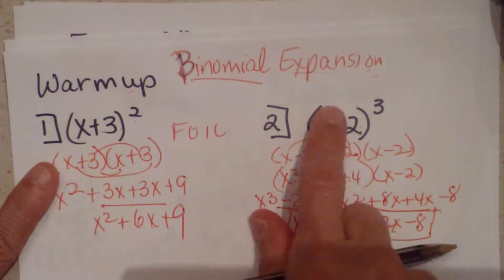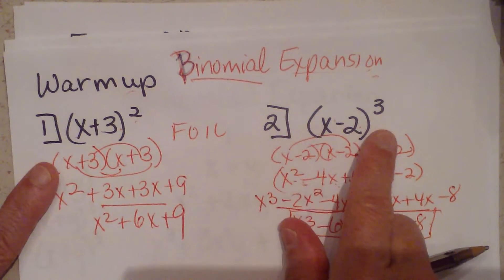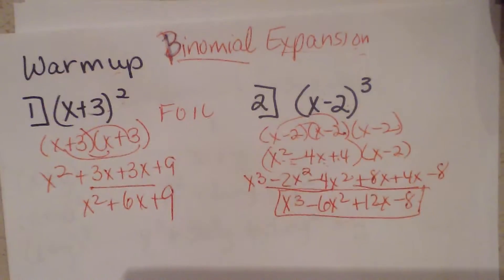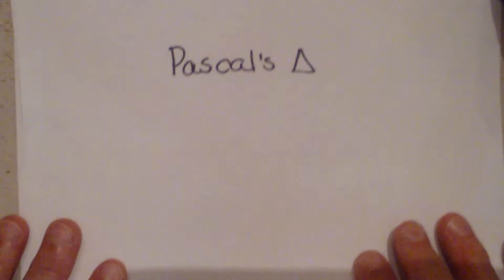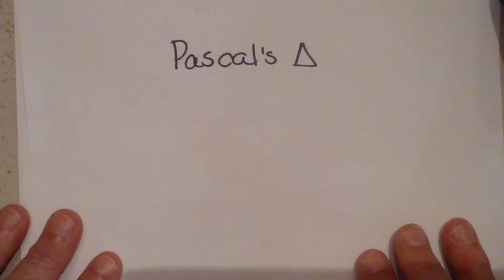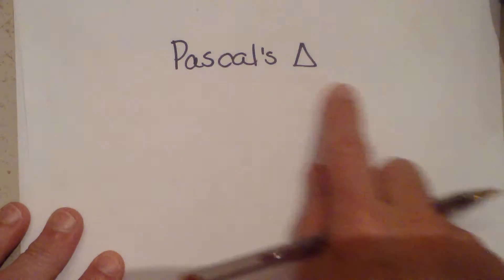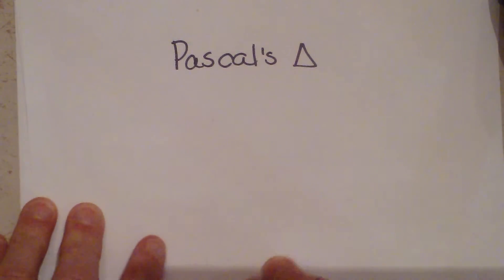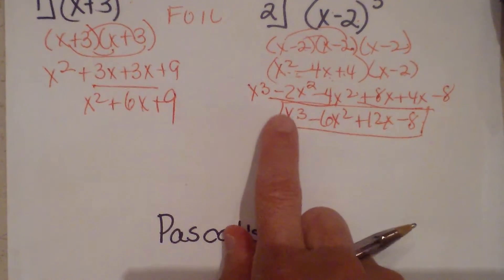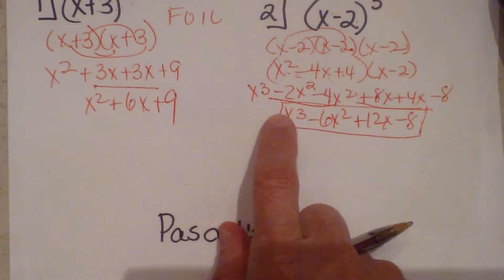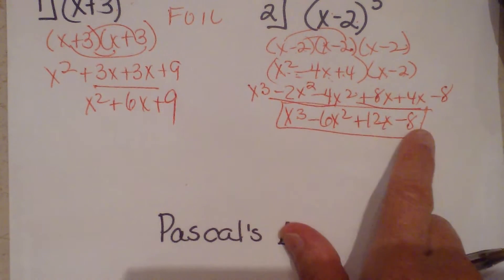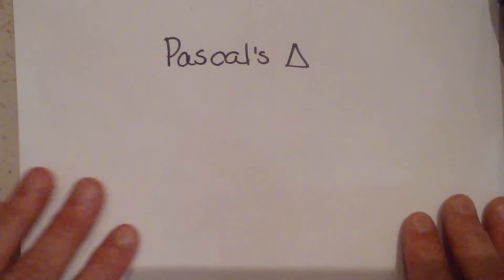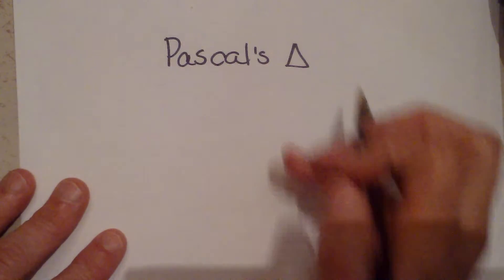There is an easier way to expand these, and it was discovered by Pascal. The first step is Pascal's triangle and how he found the coefficients. Looking at the coefficients of our answer — one, negative six, twelve, and negative eight — we can see those in the triangle.